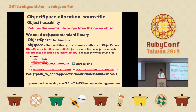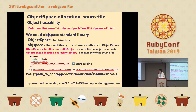Next is ObjectSpace allocation_source_file. This method returns the source file from which the given object was created. ObjectSpace is a built-in class, and objspace is a standard library that adds methods to ObjectSpace. The allocation_source_file method gets the source file where the object was made, and allocation_source_line gets the line number. You write require 'objspace', start tracing, and you can get object allocation information. This article is also on Aron-san's blog.